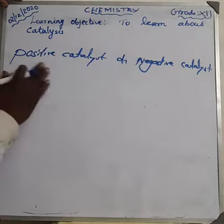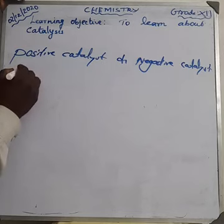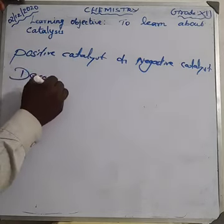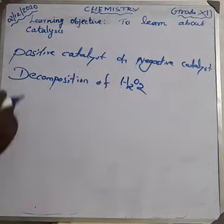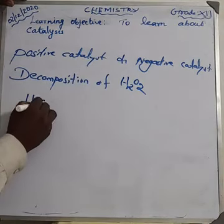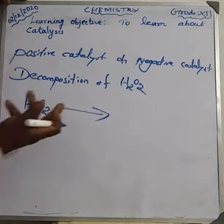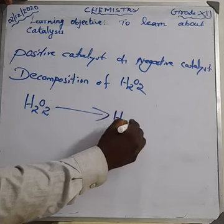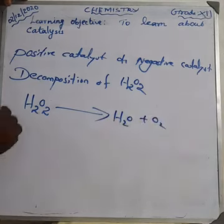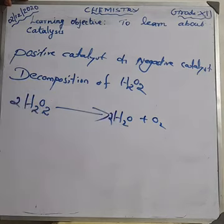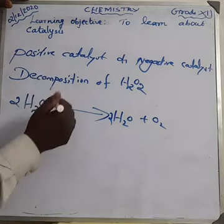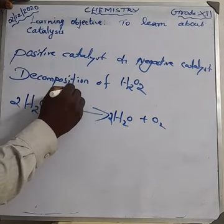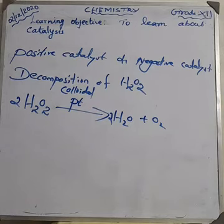What are the examples of a positive catalyst? The decomposition of hydrogen peroxide: H₂O₂ undergoes decomposition to give H₂O plus O₂. Which catalyst are we using? Colloidal platinum. When we add colloidal platinum, the reaction is increased — this is an example of positive catalysis.